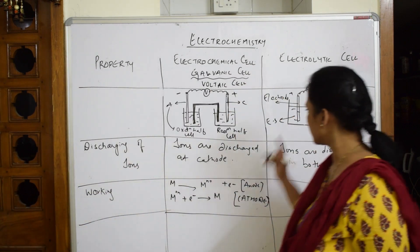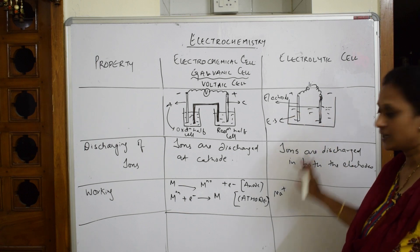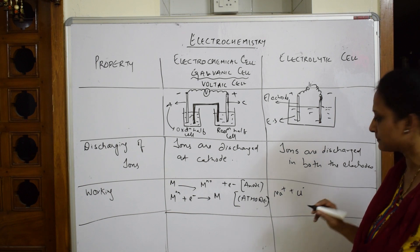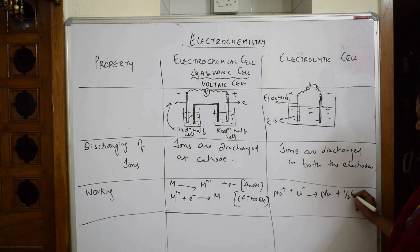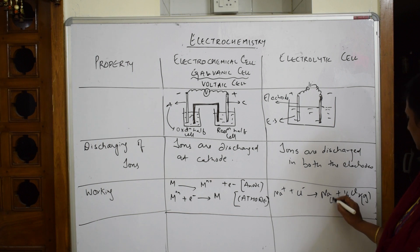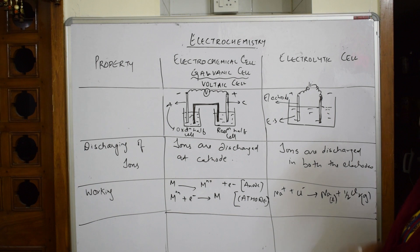For the electrolytic cell reaction, consider NaCl: Na+ and Cl- ions are both dipped in the same electrolytic cell. Na+ ions combine with electrons to form Na metal, and Cl- ions are oxidized to form half Cl₂ gas. The ions combine and form products at their respective electrodes.